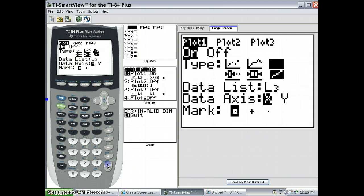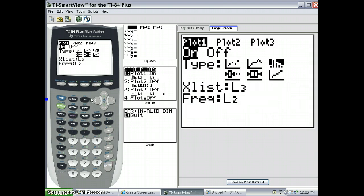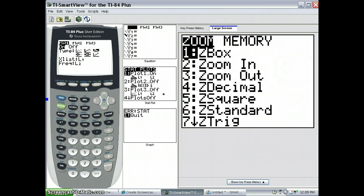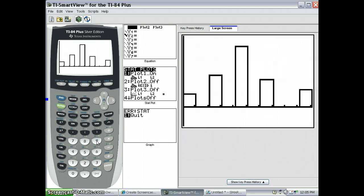And we do have a frequency list here. So remember that our x list was L1, and the frequency list was obviously L2. And we'll do zoom 9, zoom stat, and check out what this looks like.